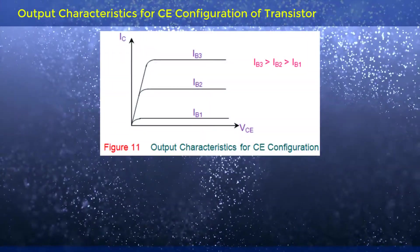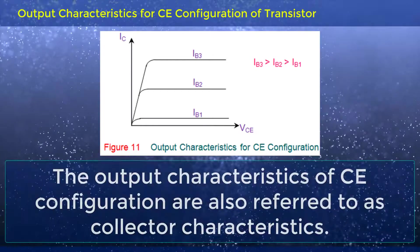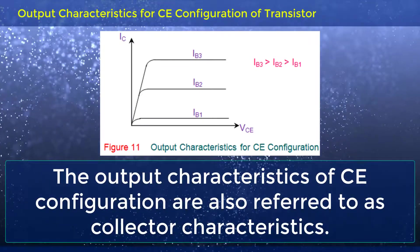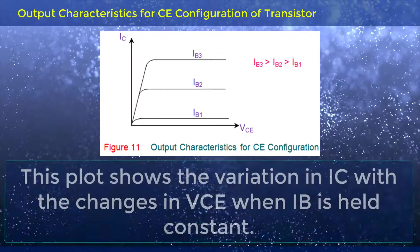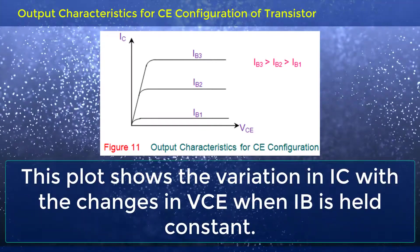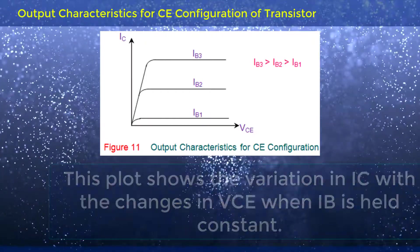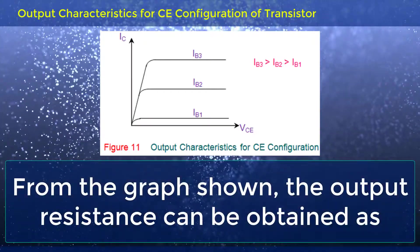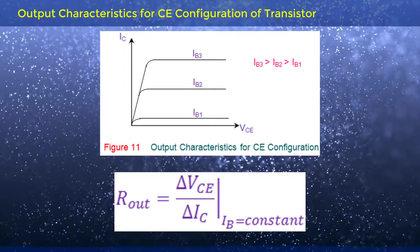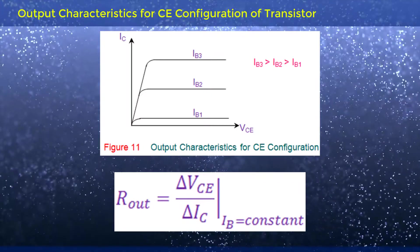The output characteristics for CE configuration of Transistor, also referred to as collector characteristics, show the variation in IC with the changes in VCE when IB is held constant. From the graph shown, the output resistance can be obtained as R_OUT equals delta VCE divided by delta IC, where IB is constant.